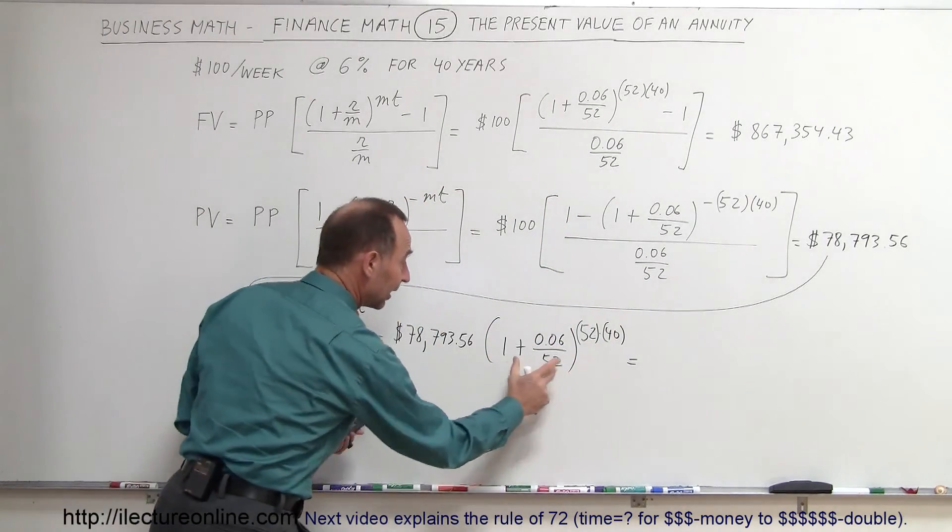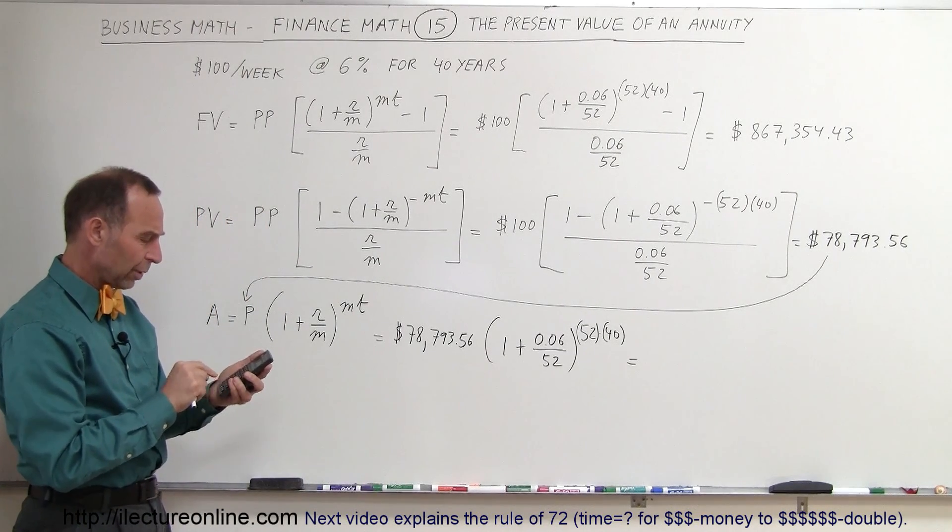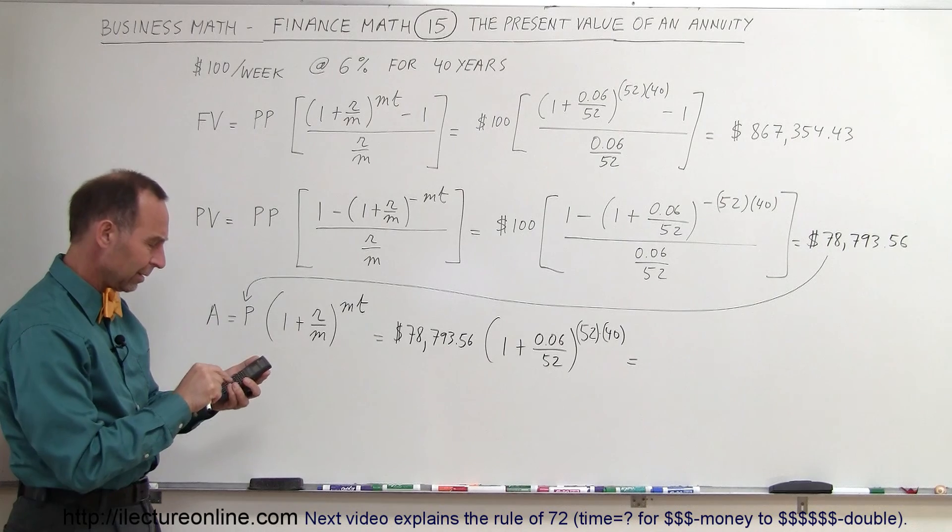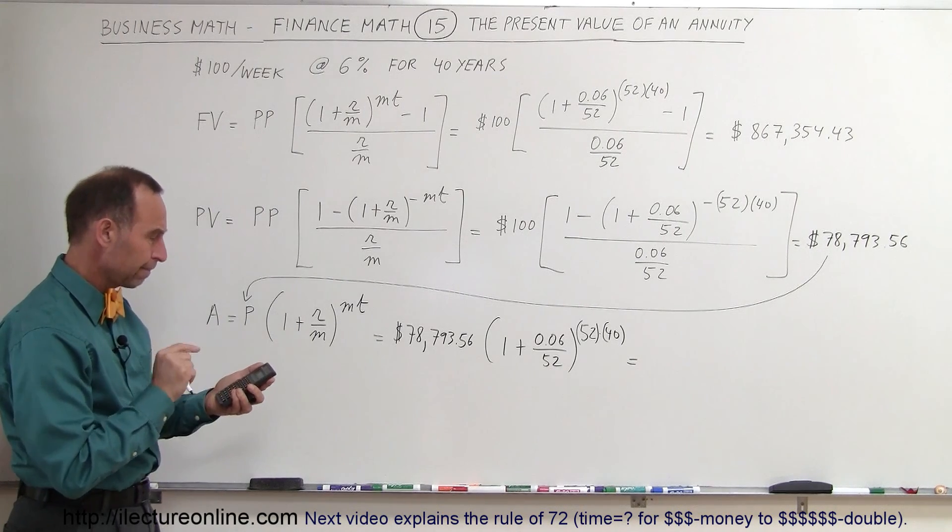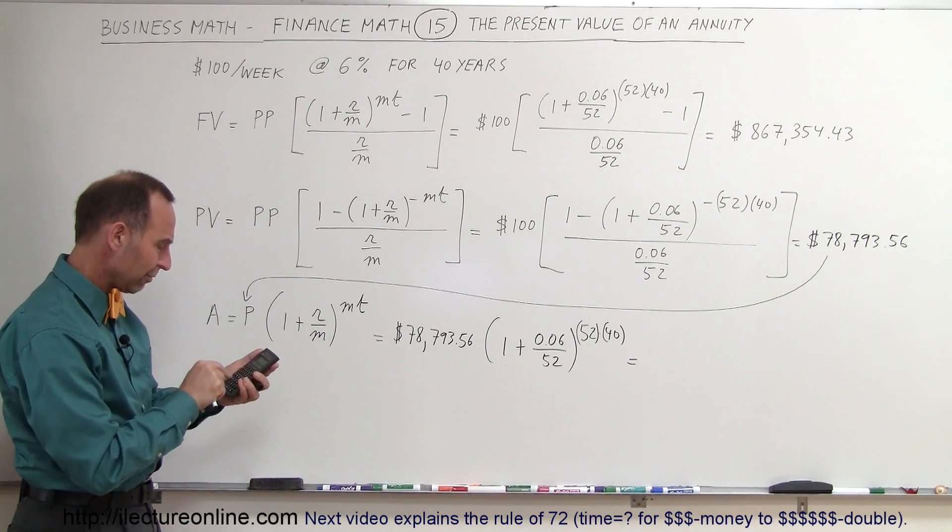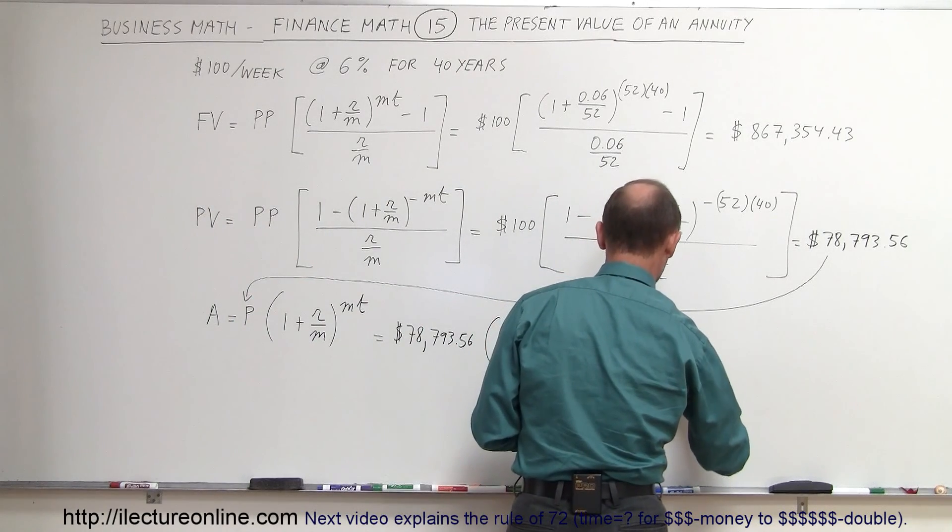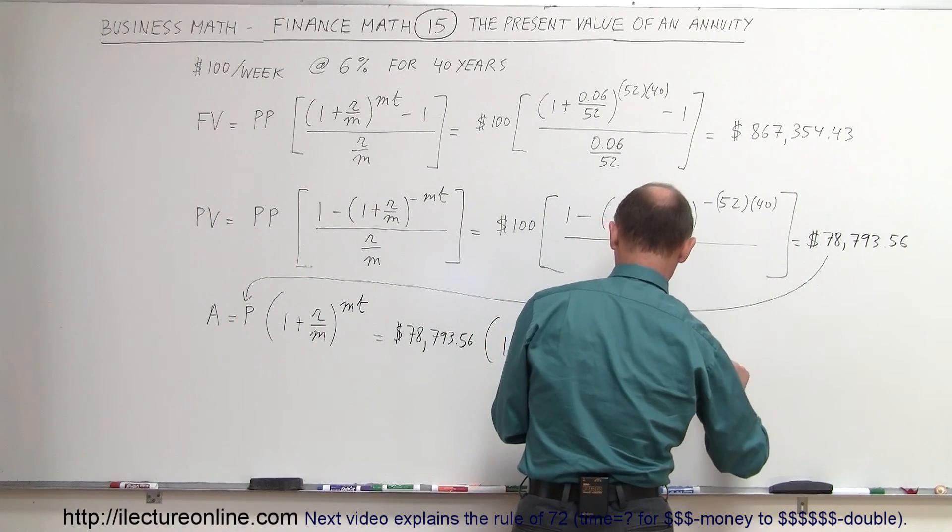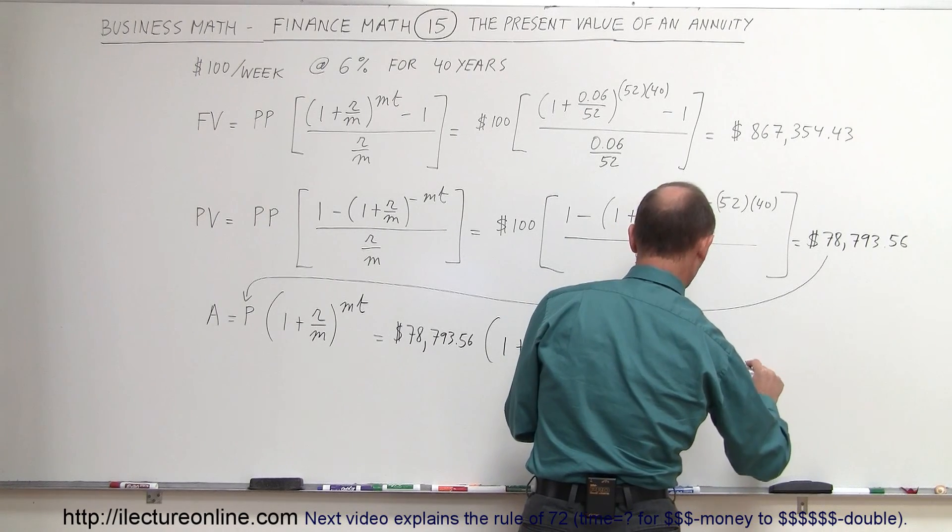Starting from the inside again, we get 0.06 divided by 52 plus 1, raise that to the 40 times 52 power, multiply that times 78,793.56, and the amount I end up with is $867,354.44.